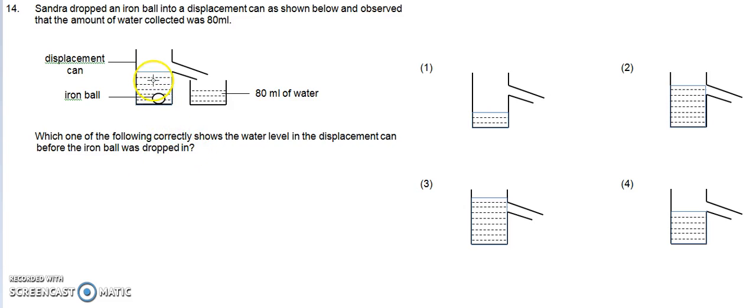Well, if you look at the can after the iron ball is dropped in, the water is at a level where it is just below the part where it will overflow into another container.